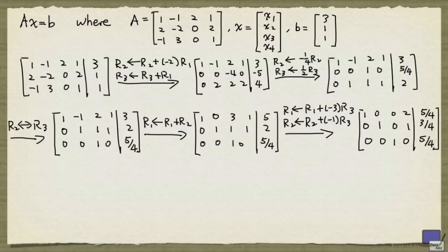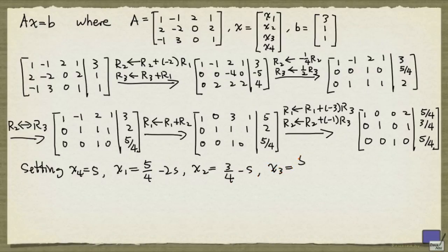But if you want to obtain all the solutions, you need to set x4 to some parameter s. Here, x4 is the only free variable. And so, setting x4 equal to s, we get from the first row that x1 has to equal 5 quarters minus 2s, x2 equals 3 quarters minus s, and x3 is 5 quarters.